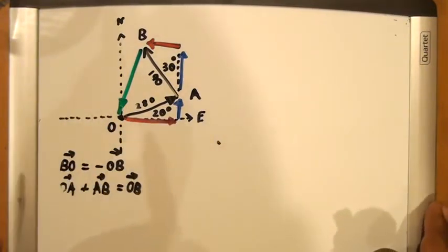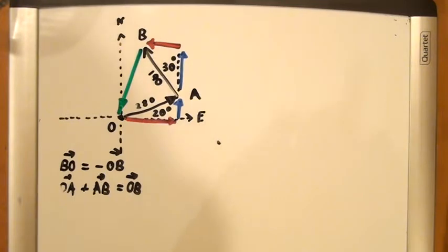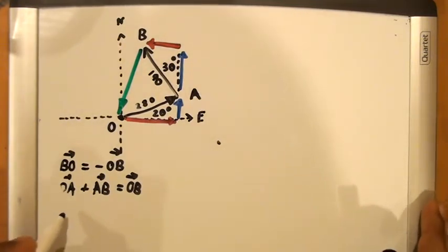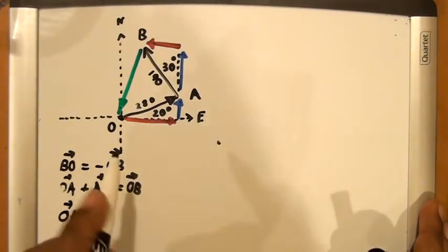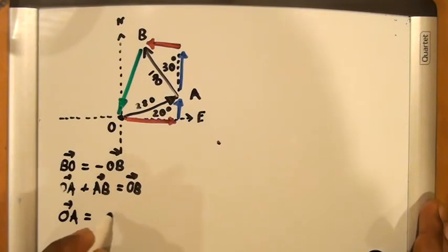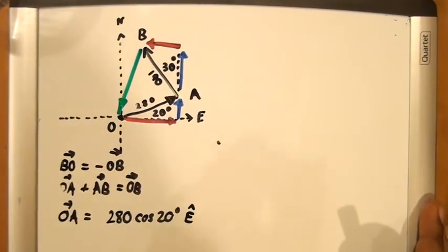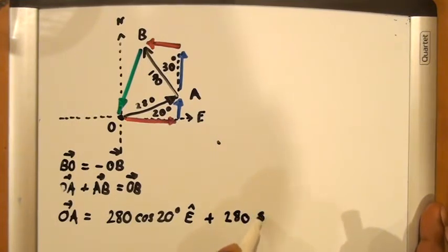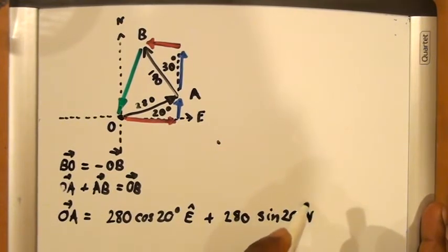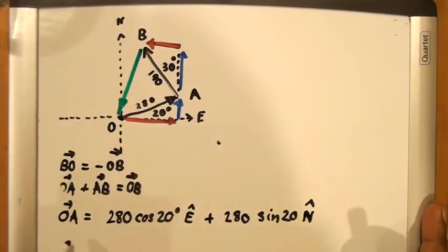Let's find the lengths of those components. We can see that vector OA is going to equal 280 kilometers times the cosine of 20 degrees in the eastward direction, plus 280 sin 20 in the north direction.